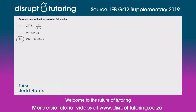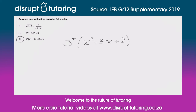Hey peeps, it's Jed here from Disrupt Tutoring. Such a pleasure to join you today. We're going to deal with an inequality — solving for x — and we've taken this from the 2019 IEB supplementary exam. I'm going to rewrite the question: it's 3 to the x times x squared minus 3x plus 2, and that is less than or equal to zero.